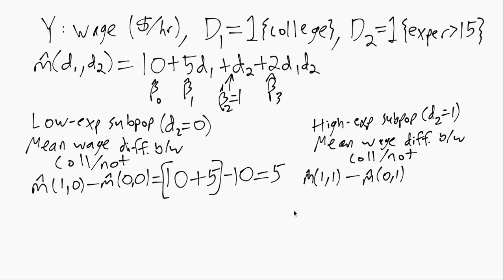So now we'll have M hat(1,1) minus M hat(0,1). Now M hat(1,1) where both D1 and D2 are 1—well D1 is 1, D2 is 1, and D1 times D2 is 1—so we'll pick up the full 10 plus 5 plus 1 plus 2.